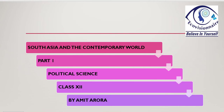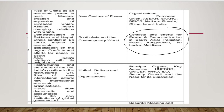Hi students, this is Amitra Hora from EcoVisioner. Today we will be starting Chapter 4, according to the new curriculum — previously it was Chapter 5 — which is Contemporary South Asia. Hopefully you have been watching all the previous videos. In the new syllabus there are hardly any changes in this chapter. The topic covers conflicts and efforts for peace and democratization in South Asia.